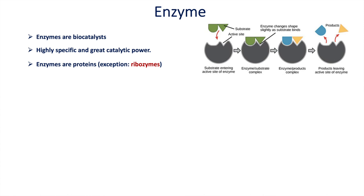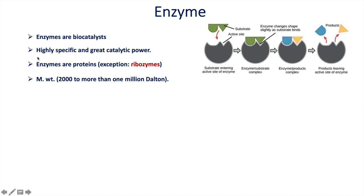Enzymes are made up of protein, so you can say all enzymes are protein — but there is an exception: ribozymes. Ribozymes are RNA molecules that have the ability to catalyze specific biochemical reactions. Since enzymes are proteins, they have a high molecular weight, ranging from 2,000 to 1 million Dalton. Proteins are made up of amino acids, and if you heat them, their conformation changes, altering the structure of the enzyme.